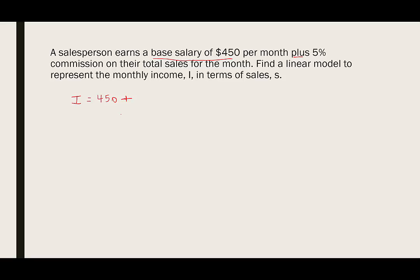Plus 5% commission on their total sales for the month. If we're going to use a percent in a problem we have to convert it to either a decimal or fraction. Usually people prefer decimals, so 5% as a decimal means we divide by 100, or move the decimal two places to the left, giving us 0.05. So the model is I = 450 + 0.05S. That would be the linear model to represent the situation.